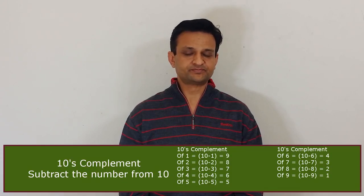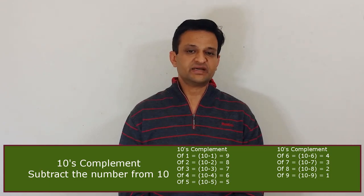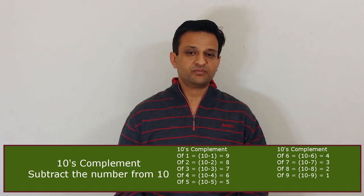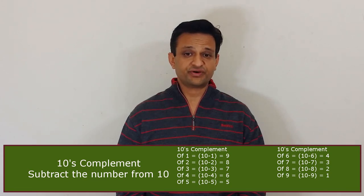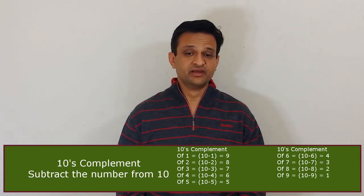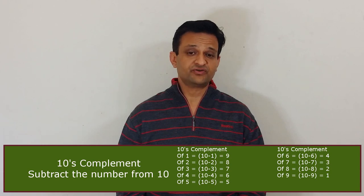What is 10's complement? We obtain 10's complement by subtracting the number from 10. For example, 10's complement of 1 is 9, of 2 is 8, of 3 is 7, of 4 is 6, of 5 is 5, of 6 is 4, of 7 is 3, of 8 is 2, and 10's complement of 9 is 1.